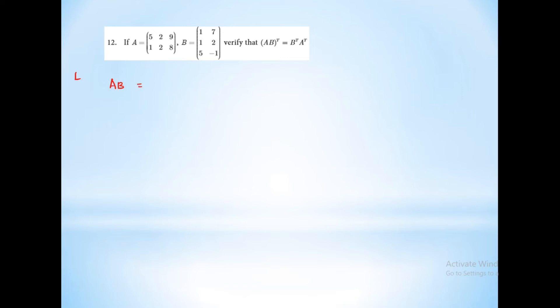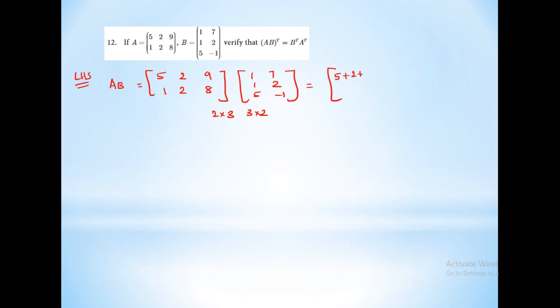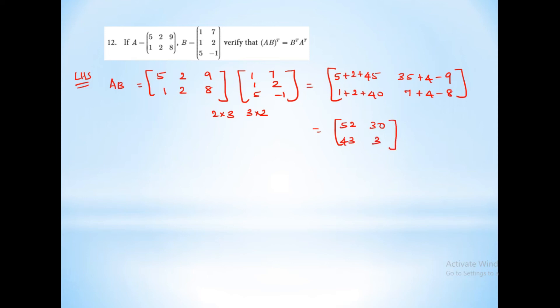Next sum: verify that (AB) transpose equals B transpose A transpose. First, AB equals 5, 2, 9, 1, 2, 8 multiplied by 1, 7, 1, 2, 5, minus 1. A is 2×3 and B is 3×2, so the answer is 2×2. Computing: first row, first column: 5 plus 2 plus 9 equals... 45 plus 7 equals 52. First row, second column: 35 plus 4 minus 9 equals 30. Second row, first column: 1 plus 2 plus 40 equals 43. Second row, second column: 7 plus 4 minus 8 equals 3. So AB equals 52, 30, 43, 3, and (AB) transpose equals 52, 30, 43, 3.